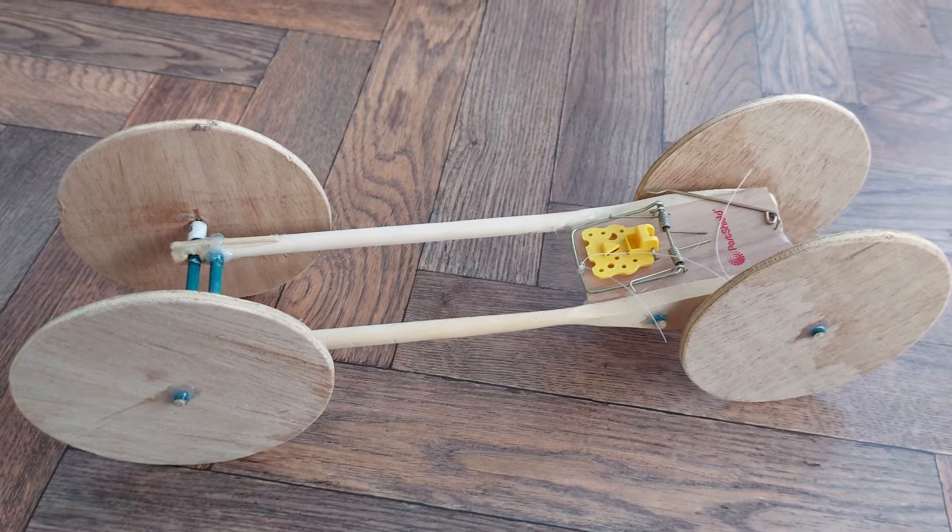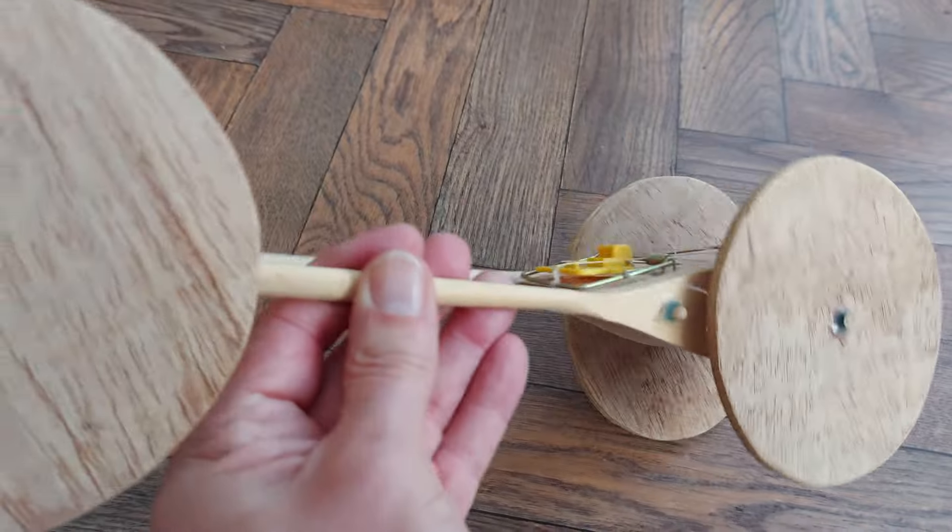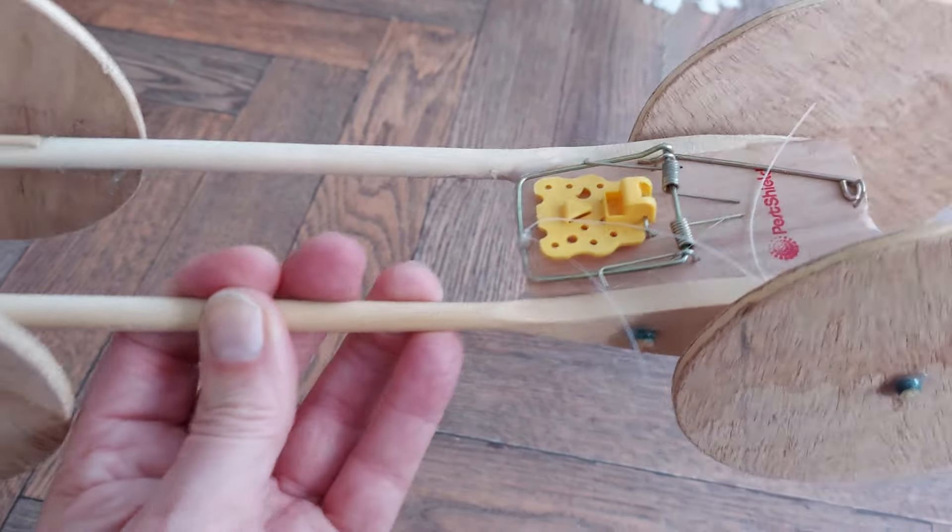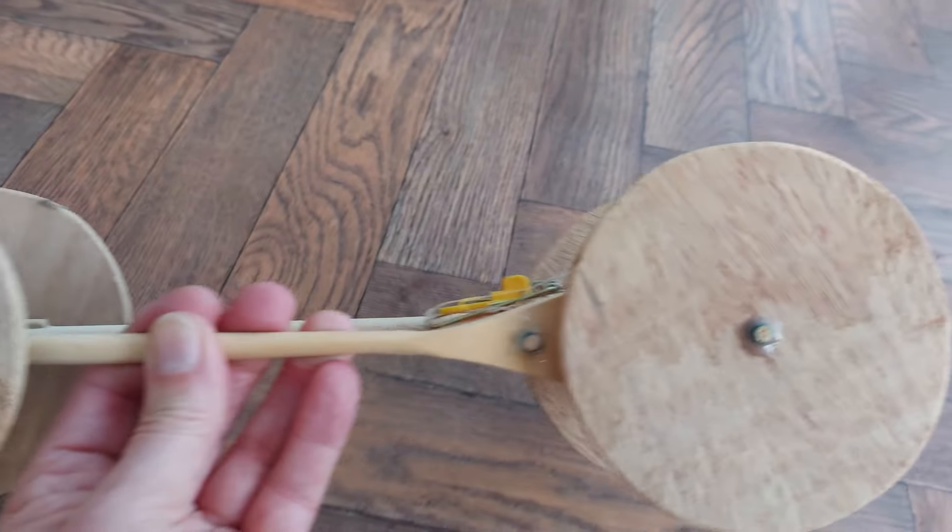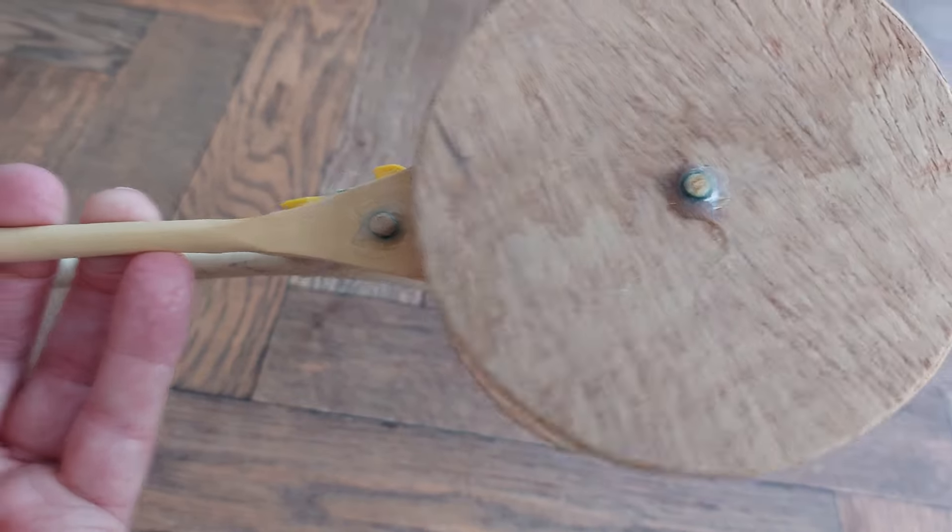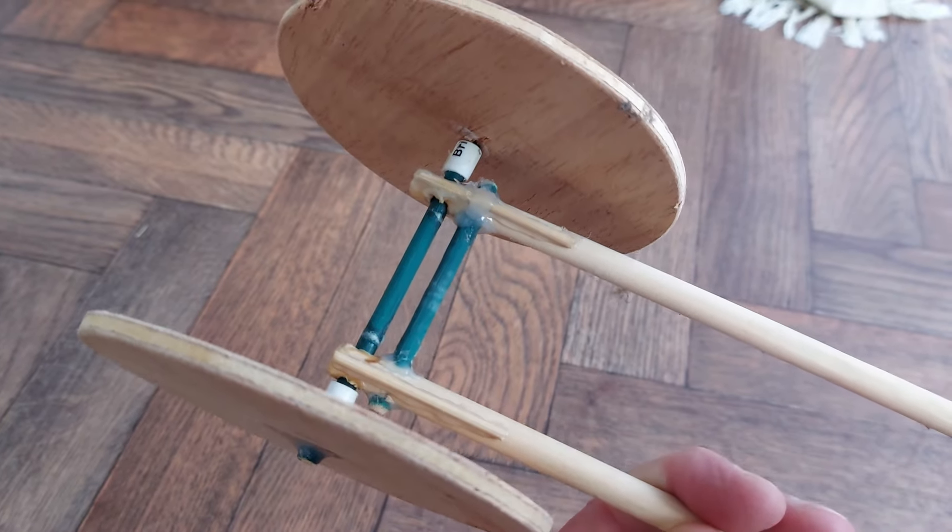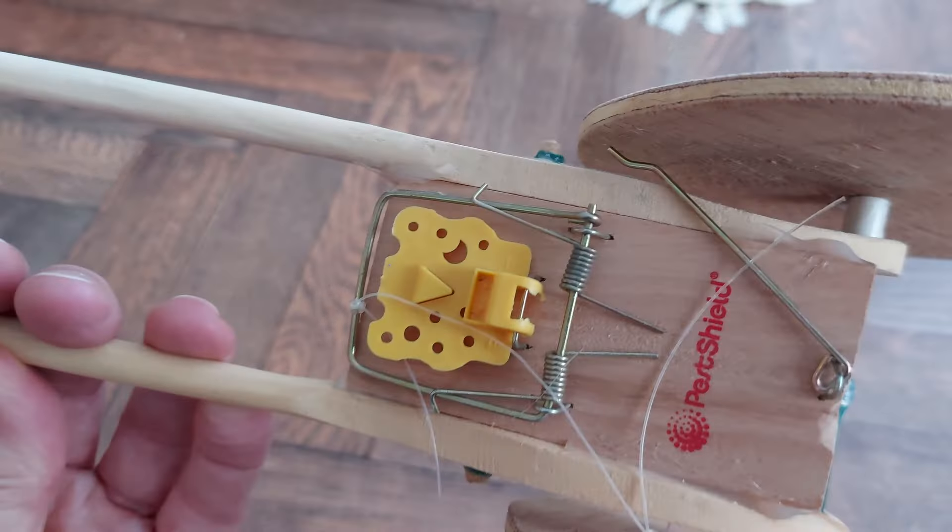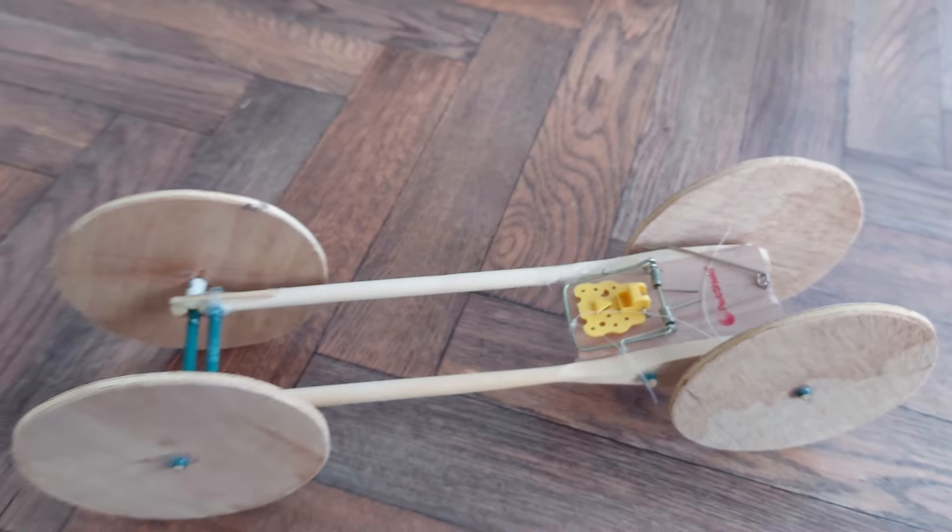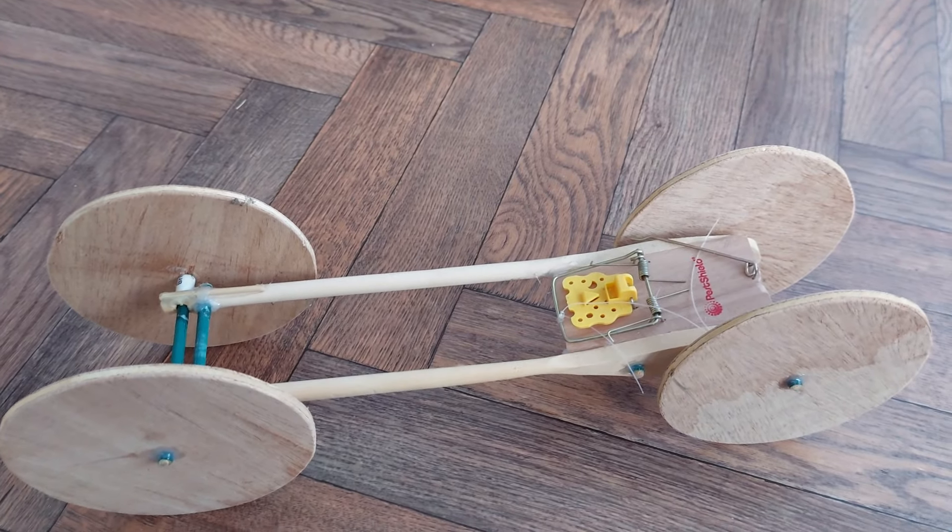So this is one of my mousetrap powered cars made from a couple of either bamboo or wooden spatulas and spoons. The wheels were cut from plywood, the axles are bamboo canes, all hot glued together. So we'll give it a run and then it's going in the bin. We need to clear out.